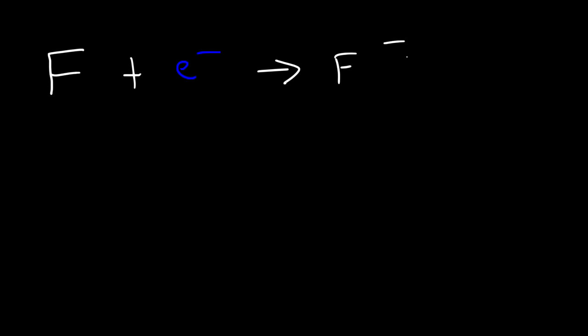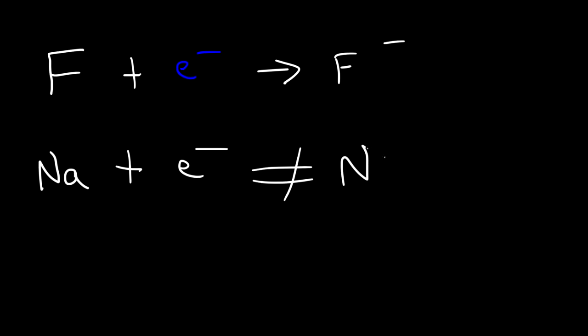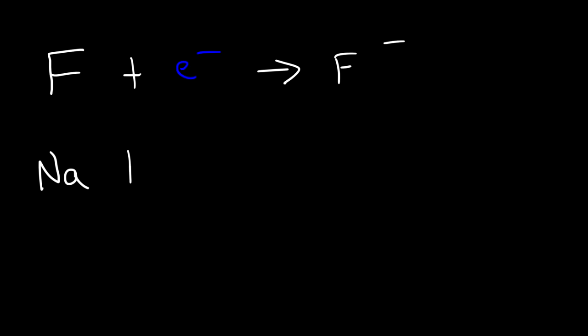In fact all of the halogens — like fluorine, chlorine, and bromine — are relatively electronegative, so they want to gain an electron. Sodium, a metal, is not electronegative. If you add an electron to sodium it's not going to form an anion; rather, sodium is electropositive.